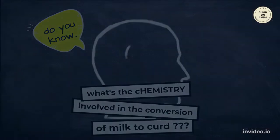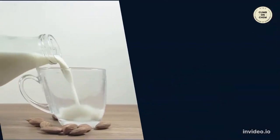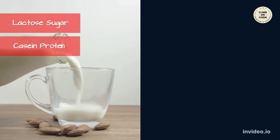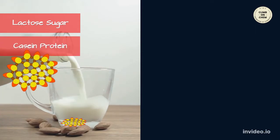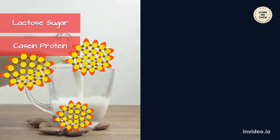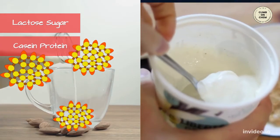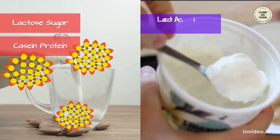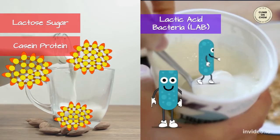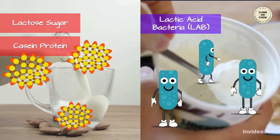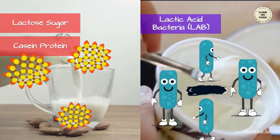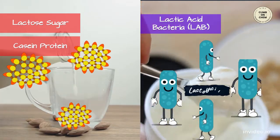Milk contains a sugar called lactose and also a protein named casein, which is globular in structure. What we add next is the inoculum, which contains numerous lactic acid bacteria. From these, lactobacillus bacteria really help us in setting the curd.